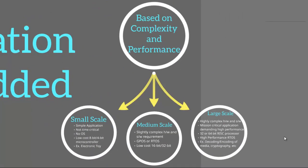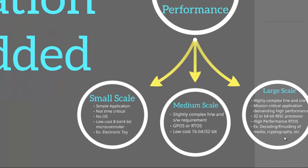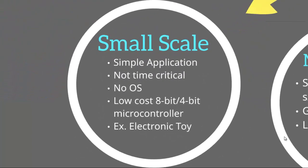Based on complexity and performance, embedded systems can be classified as small-scale, medium-scale, and large-scale. Small-scale embedded systems are simple in the types of applications they handle. The system isn't time-critical, and thus there is no operating system to manage it. Low-cost 8-bit or 4-bit microcontrollers are used. A simple example would be an electronic toy.